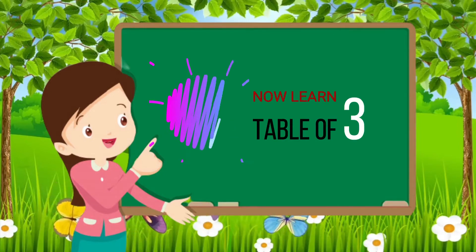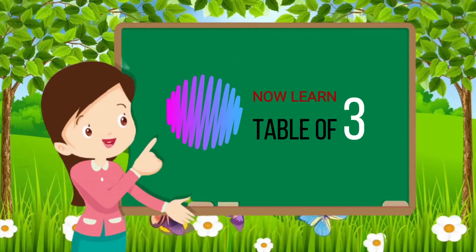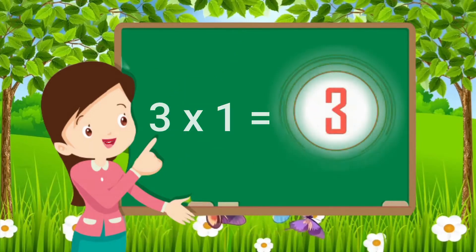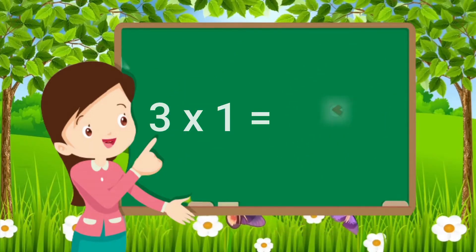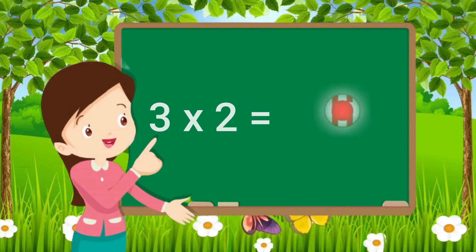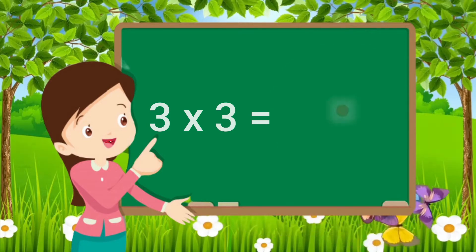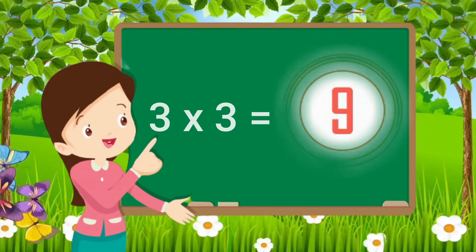Now learn table of three. Three ones are three. Three twos are six. Three threes are nine.